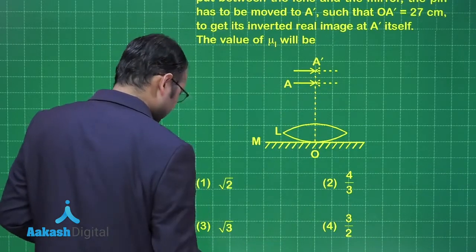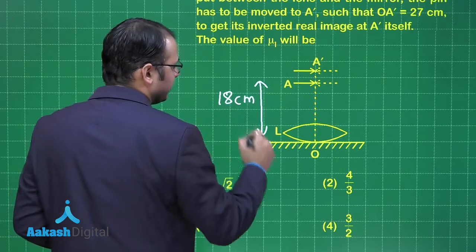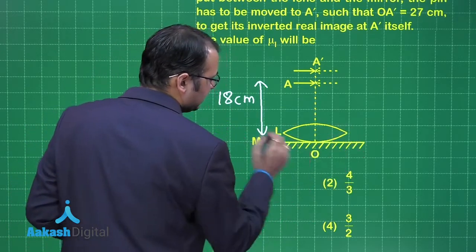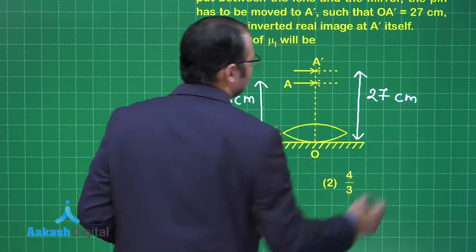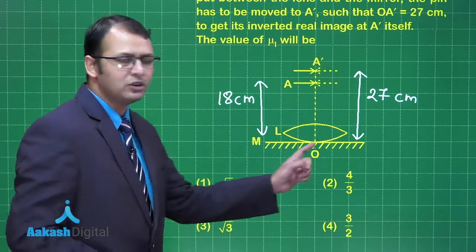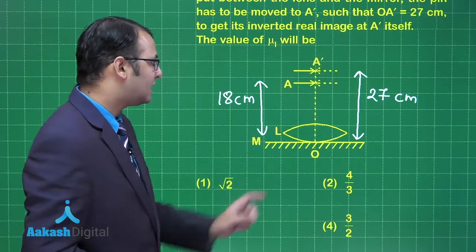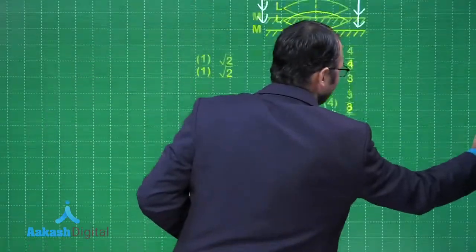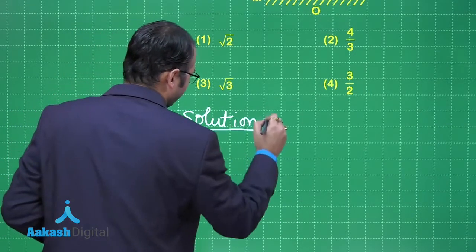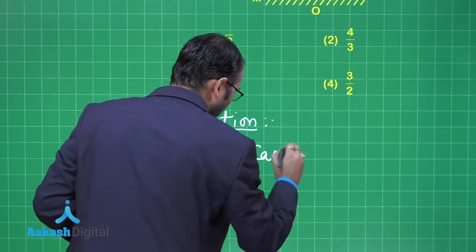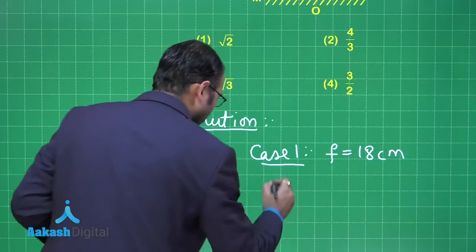Initially the pin was placed with OA = 18 centimeters. When liquid was placed between the mirror and lens, it shifted to A dash at 27 centimeters. When liquid was not present, the combination of lens and mirror formed the image at A itself, so the focal length of the combination is 18 centimeters — let's call this Case 1.